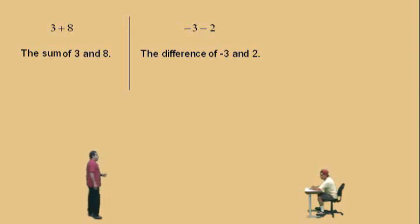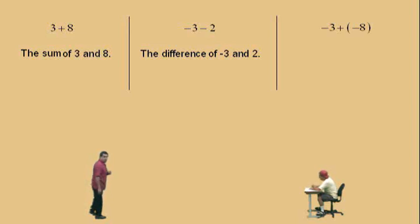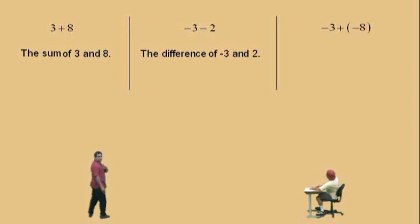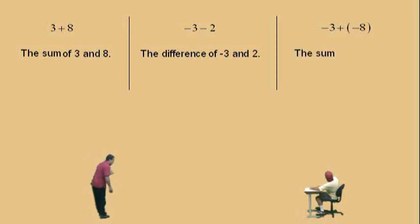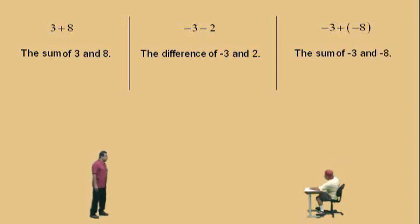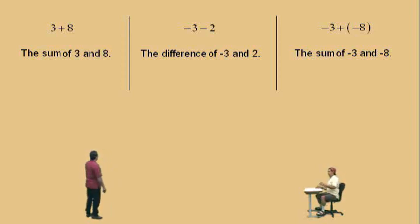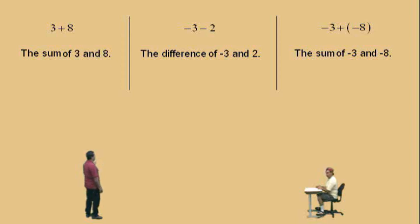Let's do another one. This one will do a sum with two negative numbers. This is a sum, so I'll help you out on that. This is the sum of what two numbers, Charlie? Negative 3 and negative 8. Negative 3 and a negative 8 — so there you go. Remember: first thing you do is identify your operation — is it a sum or a difference? And then you find your numbers.